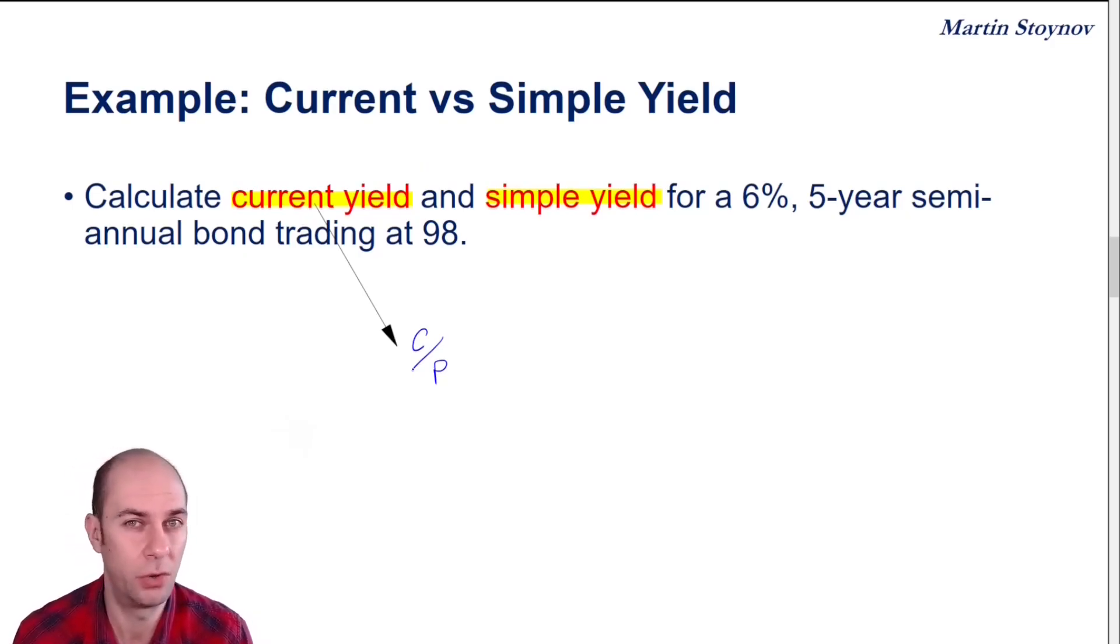If you were going to hold a bond for one year, you could simply take the forecast coupon over the next year and divide it by your current price to see what your current yield is.